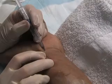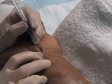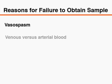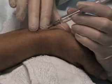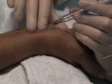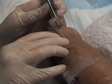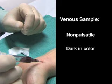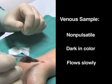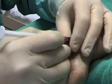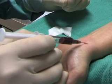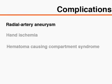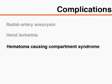The most common technical difficulty associated with radial arterial puncture for arterial blood gas analysis is failure to obtain a blood sample because of vasospasm, or obtaining venous instead of arterial blood. If vasospasm is suspected, abort the procedure and re-attempt it on the other wrist. A blood sample is likely to be venous if it is non-pulsatile and dark in colour and it flows slowly. It should be noted, however, that very deoxygenated blood in a patient with hypoxemia could also appear dark even though it is arterial. Serious vascular complications of radial arterial puncture are rare and include radial arterial aneurysm, hand ischemia, and hematoma-causing compartment syndrome.